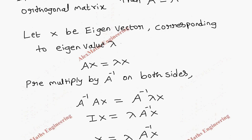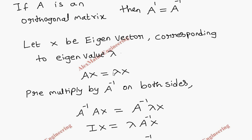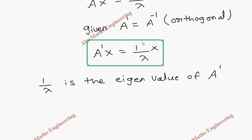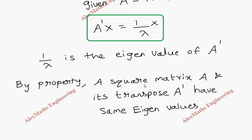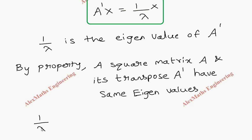Just as lambda is the eigenvalue for matrix A expressed as AX = λX, we have a similar expression here: A dash into X equal to 1 by lambda times X. So from this, 1 by lambda is the eigenvalue of A dash. And we already know the property that a square matrix A and its transpose A dash have the same eigenvalues. Therefore, when 1 by lambda is the eigenvalue of A dash, 1 by lambda is also the eigenvalue of A.